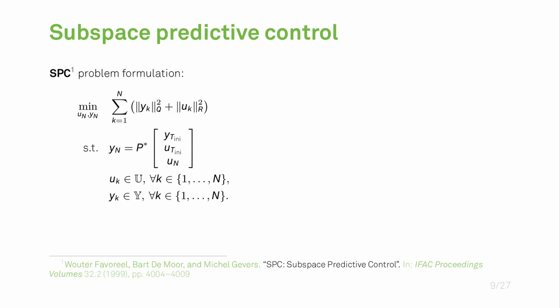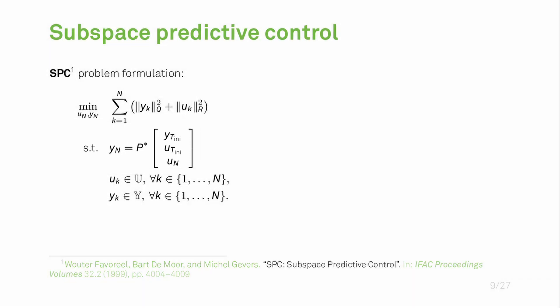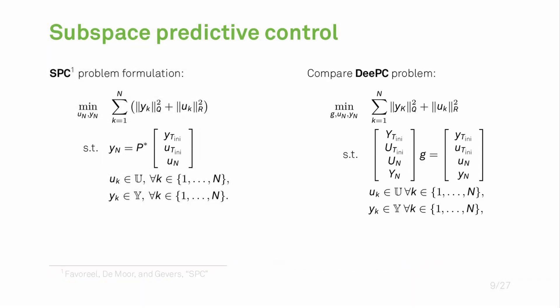With this prediction model we can formulate the subspace predictive control method, which was first introduced in 1999 and is shown here on the left hand side. The most essential part of this problem is the constraint which is exactly the previously shown prediction model. If we compare this SPC problem to the previously shown DeePC problem, we see quite a lot of similarities and we also have to keep in mind that both methods are based on the exact same data matrices.